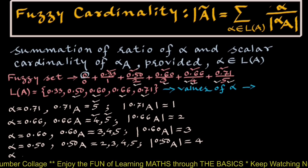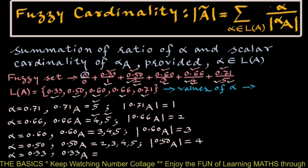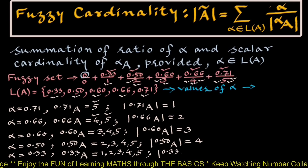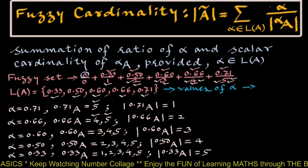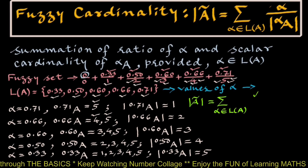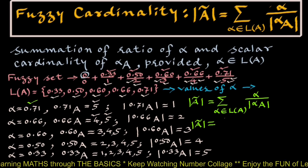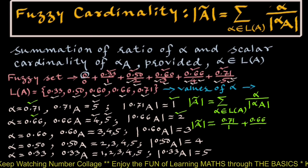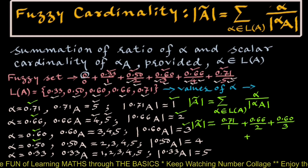Finally, for alpha equals 0.33, the 0.33-cut A will contain {1, 2, 3, 4, 5}. Hence scalar cardinality of 0.33-cut A contains 5 elements. According to the definition of fuzzy cardinality, the summation for alpha belonging to level set A is the ratio of alpha and scalar cardinality of alpha cut A, which gives: 0.71/1 + 0.66/2 + 0.60/3 + 0.50/4.